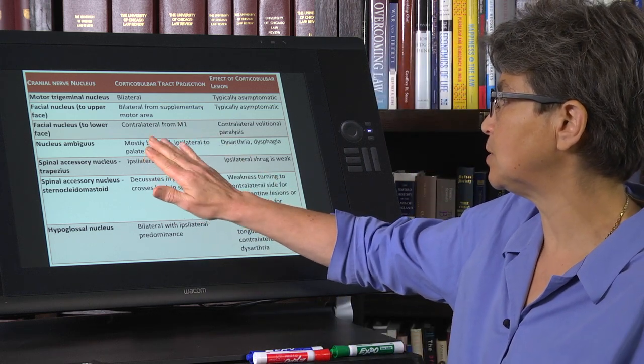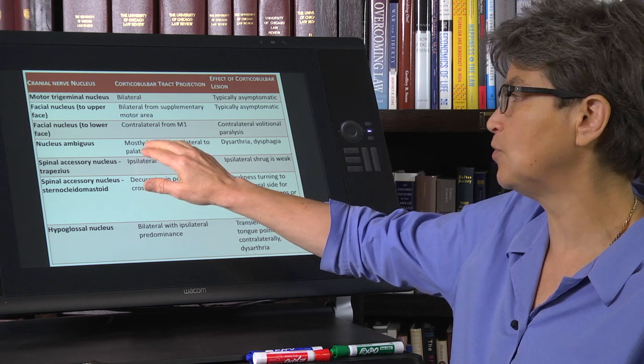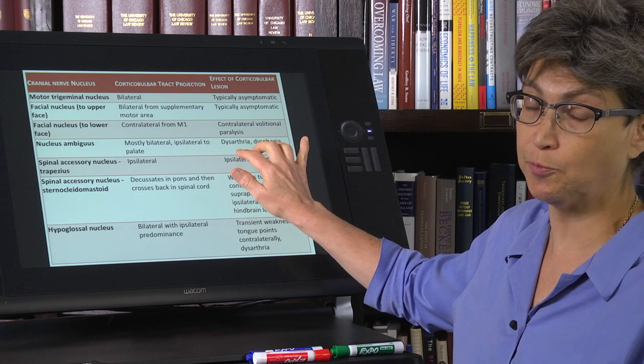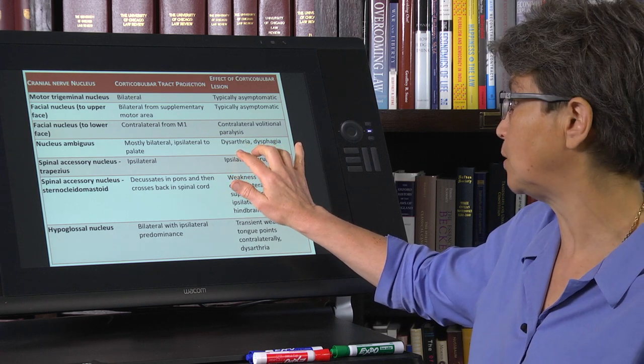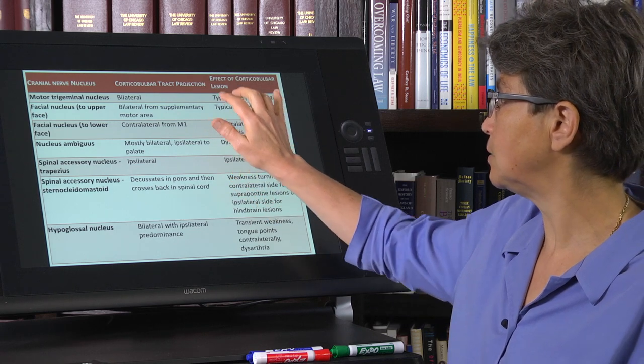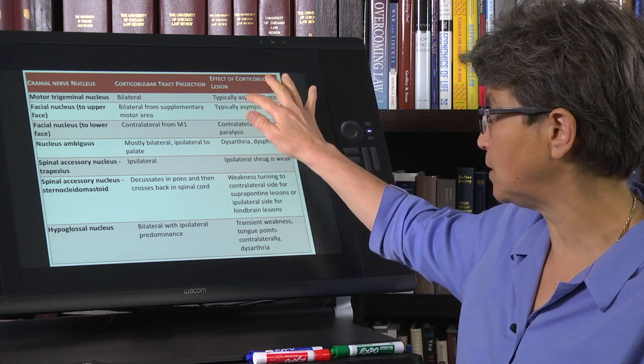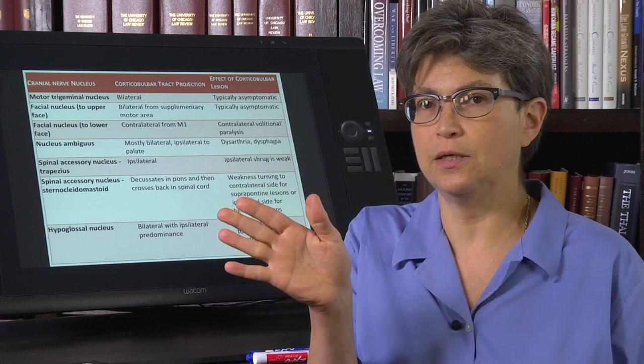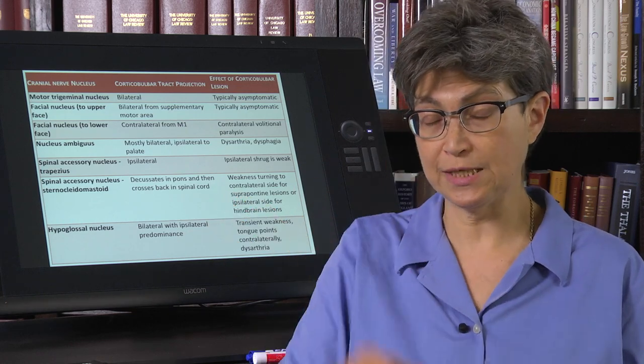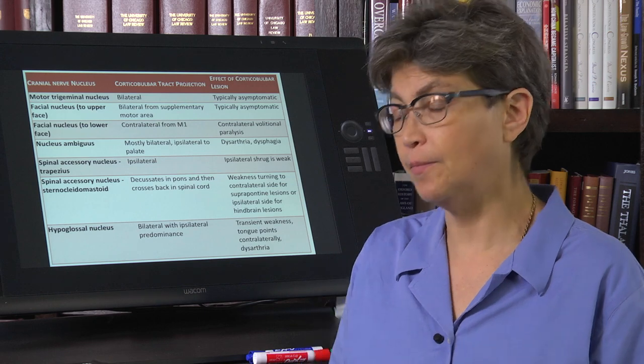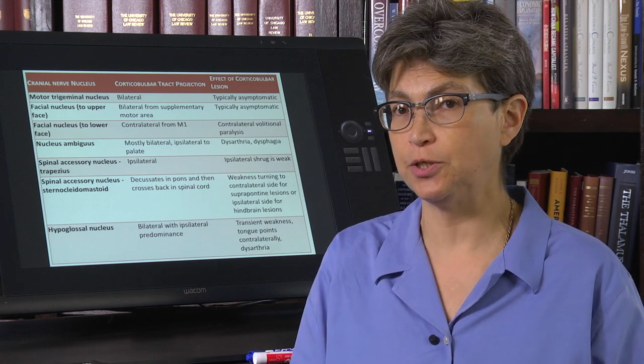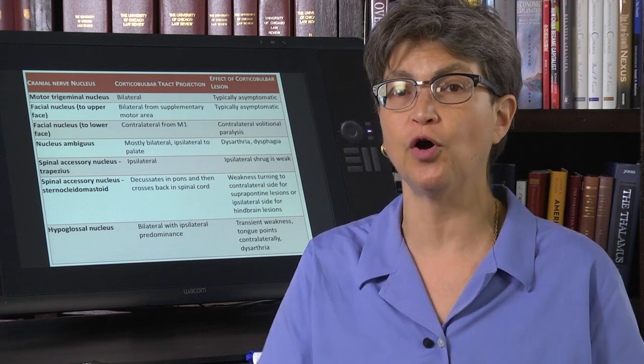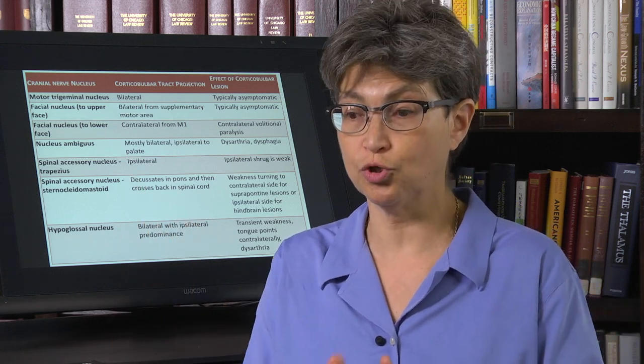Nucleus ambiguous, even though it's bilateral, disrupts the principal movements of speech and swallowing. Motor trigeminal is typically asymptomatic. The bottom line is there will be a tongue deviation when the person is asked to stick out their tongue, and there also may be some problems with speech. In the next video, we're going to move on to facial motor control.